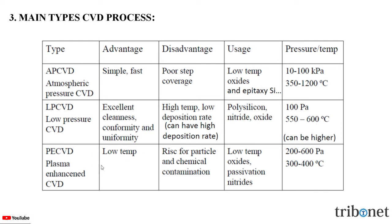In plasma enhanced CVD, the advantage is operation at low temperature. The disadvantage is the risk of particle and chemical contamination. Its usage includes low temperature oxide and passivation nitrides. The operating pressure and temperature is 200 to 600 Pascals and 300 to 400 degrees Celsius.